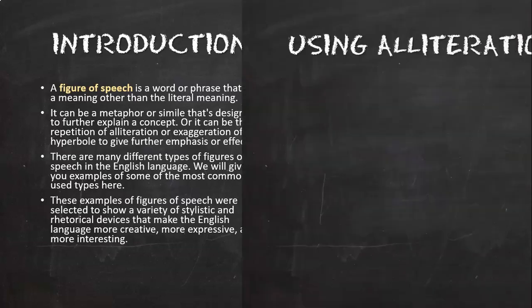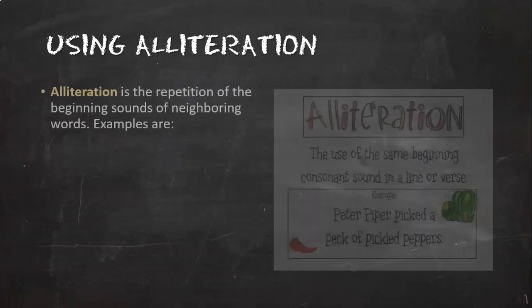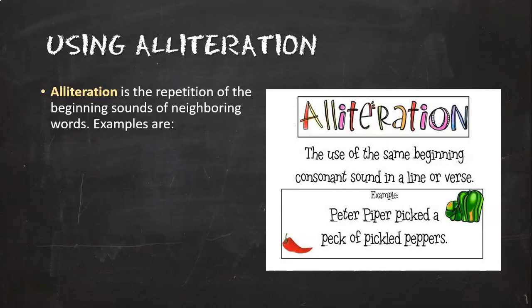These examples of figures of speech were selected to show a variety of styles. So here we go. Alliteration is the repetition of the beginning sounds of neighboring words. So let's see, you've heard this before: 'Peter Piper picked a peck of pickled peppers,' and you're supposed to say it three times fast. Normally I would have students say this and give them some candy if they said it, but you can try to say it. Just press pause and do it now if you want.